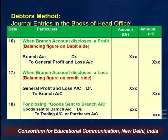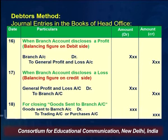When preparing the Branch Account under the Debtors Method, the account discloses profit or loss. The Branch Account is nominal in nature and its purpose is to find out profit or loss earned by the branch. If there is a profit (credit side exceeds debit side), the entry is: Branch Account debit to General P&L Account. If there is a loss, the entry is: General P&L Account debit to Branch Account.